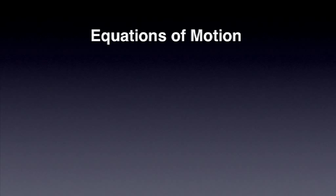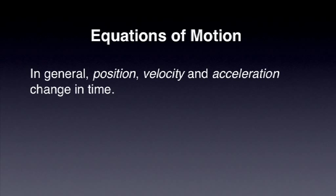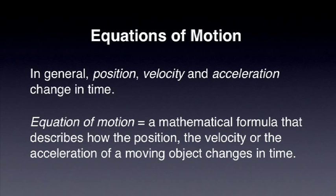In general, the position, velocity and acceleration of a moving body change in time. In these podcasts, I'm using the term equation of motion to simply label any mathematical formula that gives us the position, the velocity or the acceleration of a moving object as a function of time. In simple words, an equation of motion tells us how each one of these quantities changes in time.